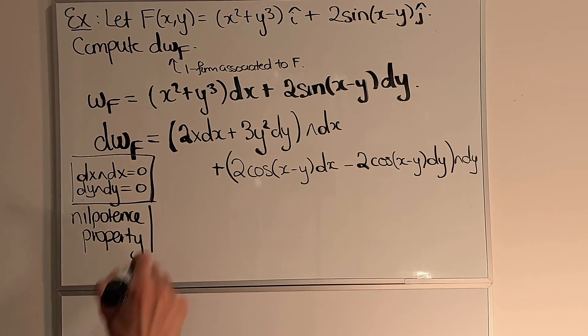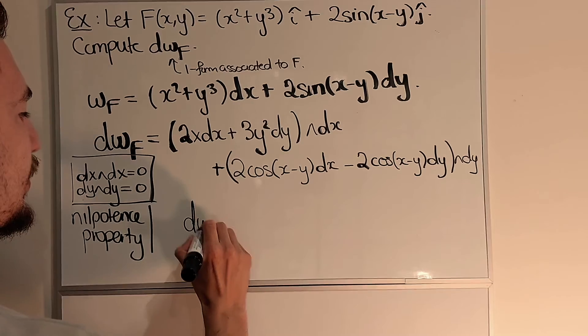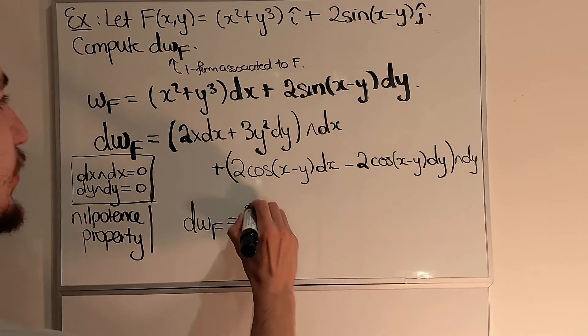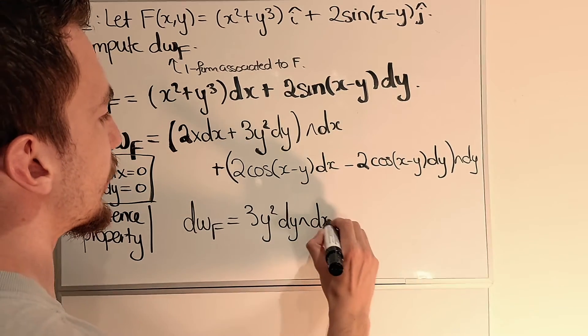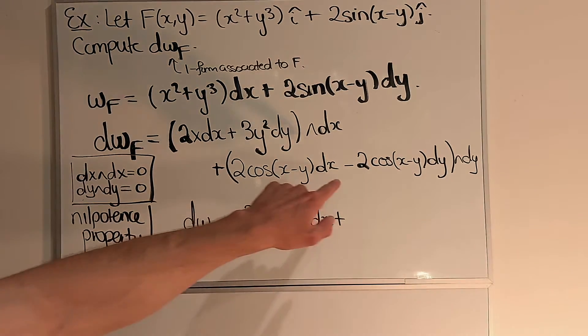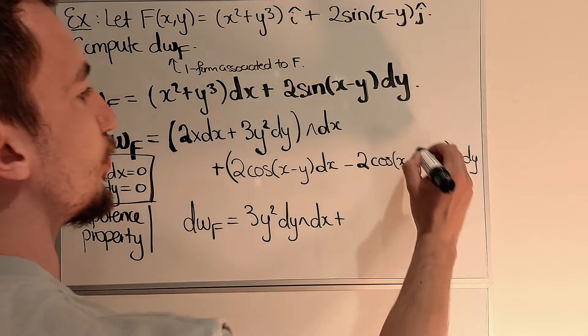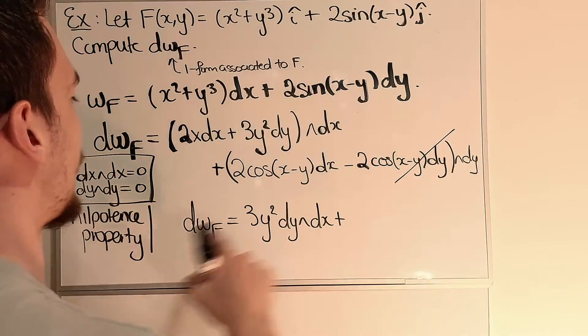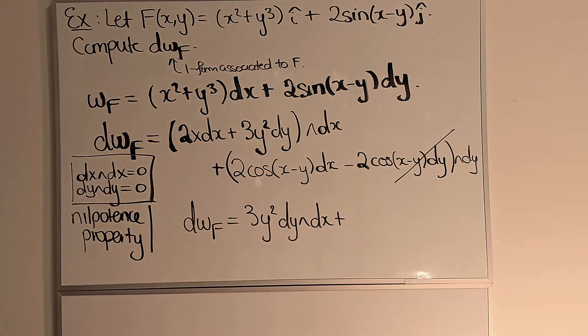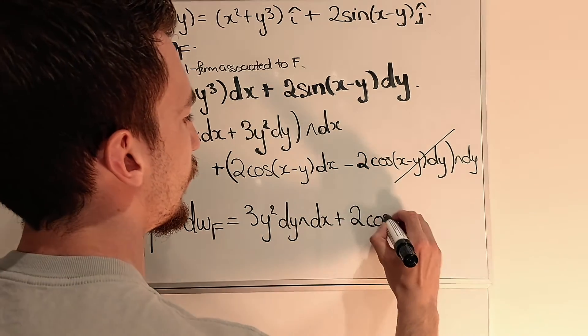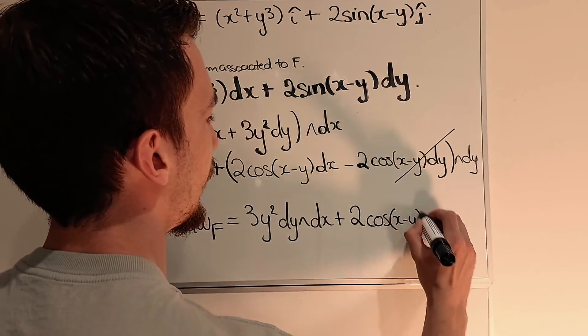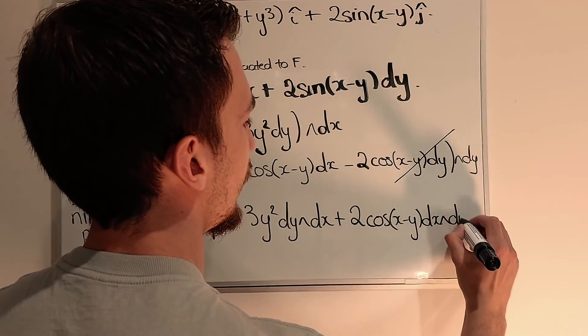What we see is we get dωF that's now just 3y² dy∧dx plus, now in this case this term will cancel because of the dy∧dy. And therefore what I have here is just 2cos(x-y) dx∧dy.